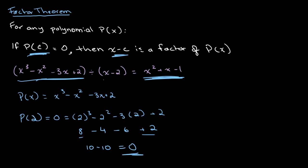So once again, since x minus 2 is a factor of this equation, when we plug in 2, or our value for c, into our equation, then what we get in return is 0. And using this theorem is a very quick way to find the different factors of polynomials.